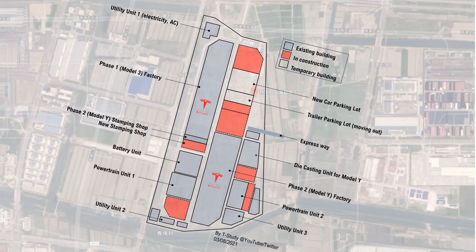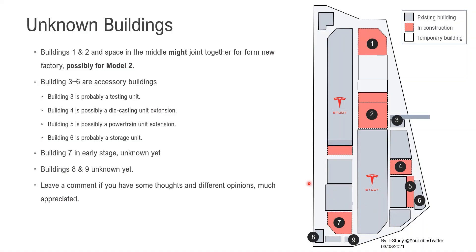This is the overlay of the campus map with Google Maps. You can see they are aligned very well. We also notice that the campus is not exactly north-south direction — it's tilted a little bit. There are many buildings we still don't know the purpose of. I've labeled them with numbers so it's easier for us to have further discussion about them.